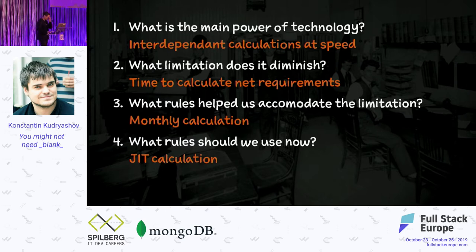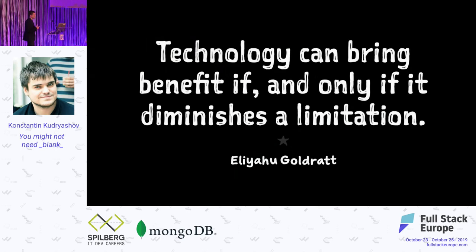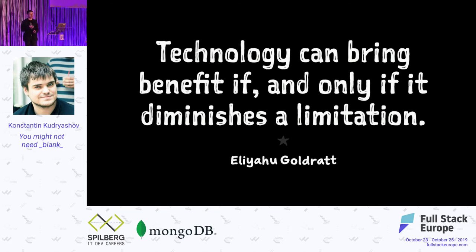That realization helped Eliyahu Goldratt coin one of his famous rules: technology can bring benefit if and only if it diminishes the limitation. The benefit of technology doesn't come with the power of the technology — the benefit comes with replacing the previous rules and actually seeing the limitation gone.